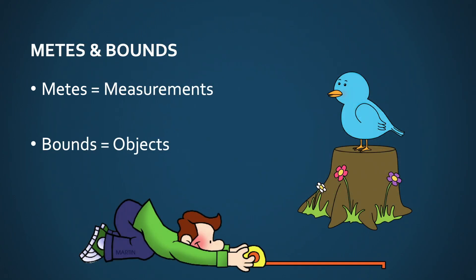The first type is metes and bounds. Metes are measurements — 500 feet, 200 feet, 10 chains — but metes could also be bearings, such as north 89 degrees west or 239 degrees based on a north azimuth. We've also got bounds. Bounds are objects, which could be natural — streams, rivers, mountaintops, tops of hills — or artificial objects, including things like rebar, pipes, truck axles, or Jack Daniels bottles.